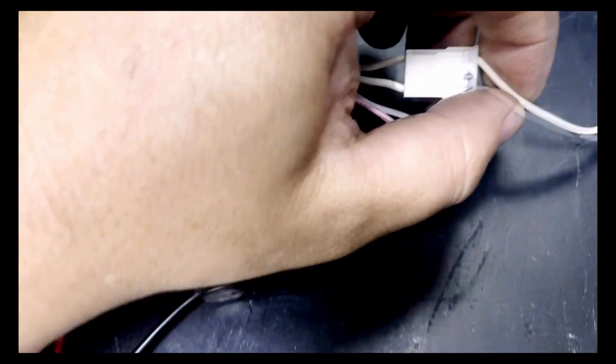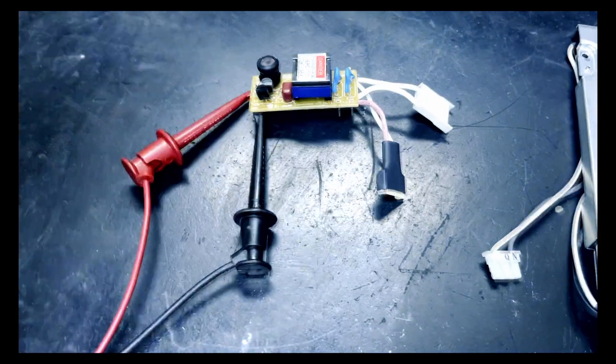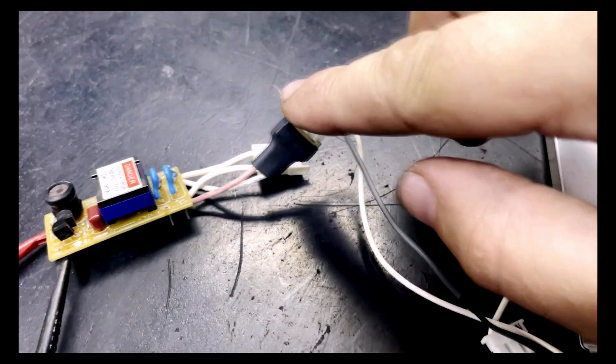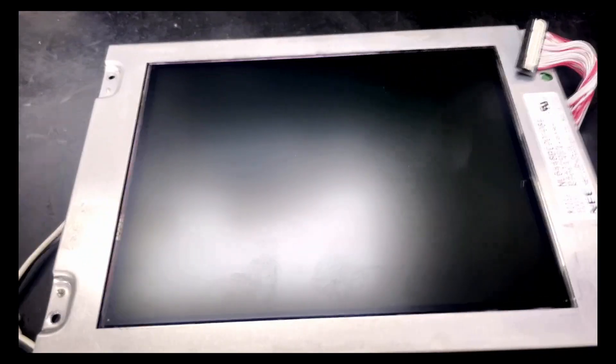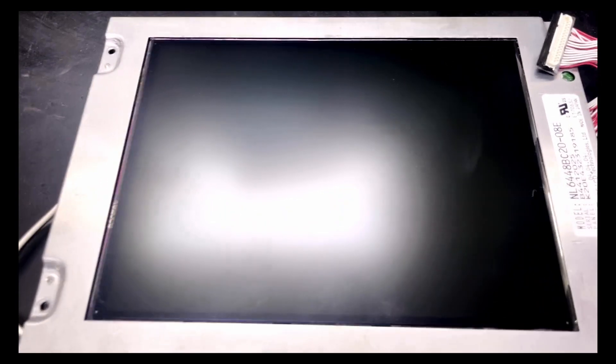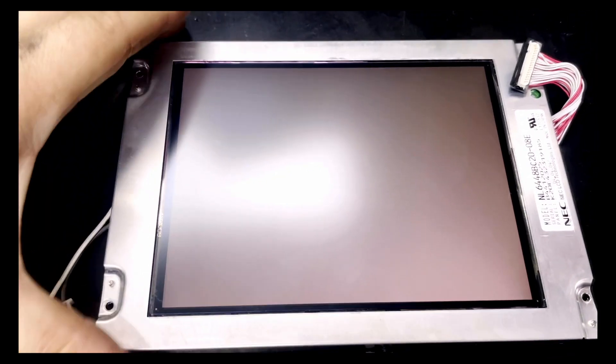Now we will test the second backlight. So we are going to go ahead and unhook this one and hook up the second backlight. Which we have now. And go ahead and turn on our power. As you can see this second backlight is functional.